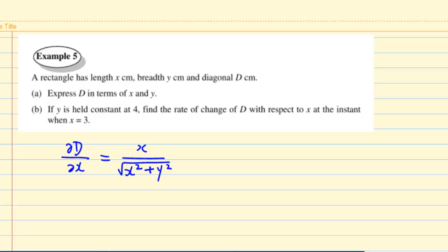So the rate of change of D with respect to x when x is equal to 3, y is equal to 4, this is equal to 3 over square root of 3 square plus 4 square, which is 3 over 5, or 0.6.